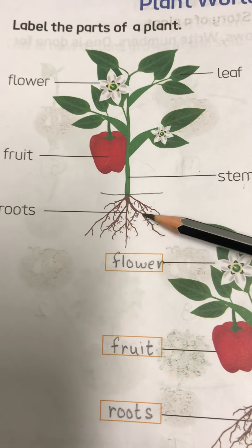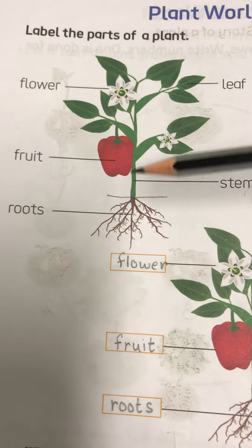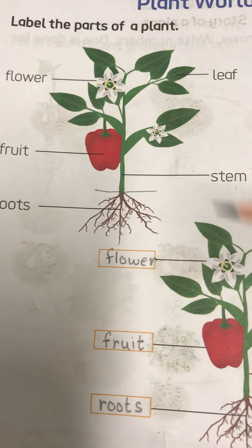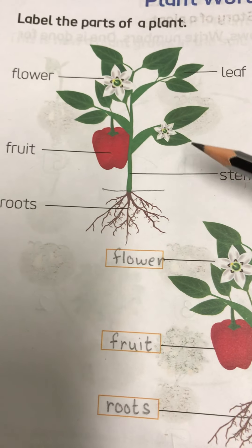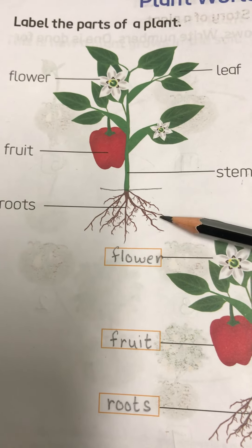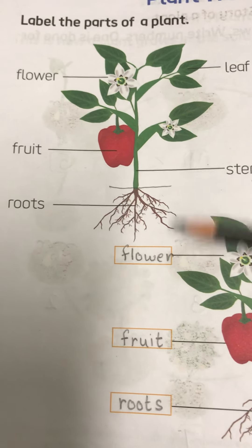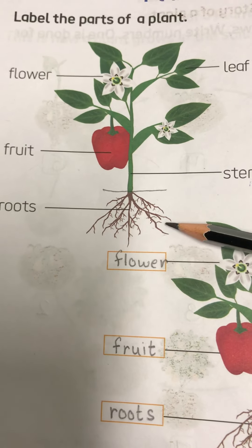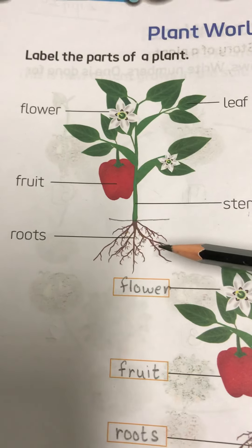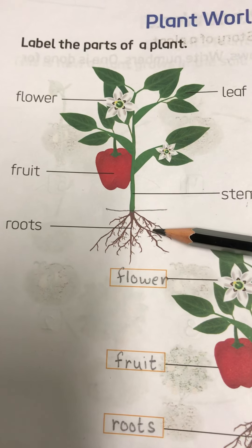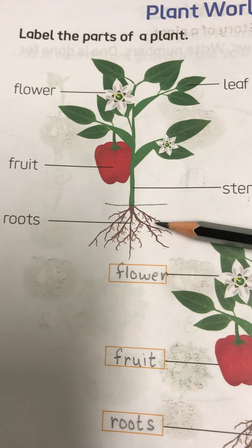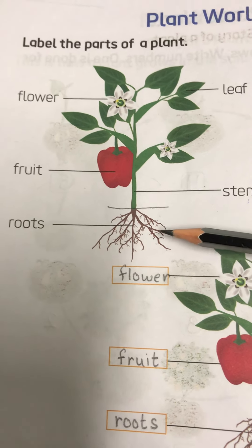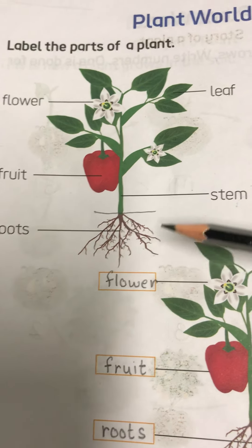Also, the roots support the stem. The roots are in the ground, so they give support to the plant and support the stem. Also, the roots store food for the plant. So to repeat: roots support the plant, roots store food, and roots absorb moisture and nutrients required for the growth of the plant.